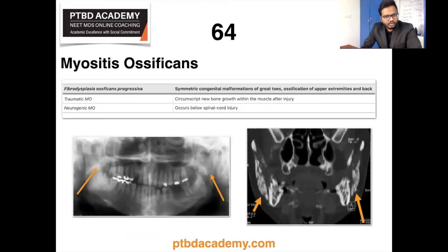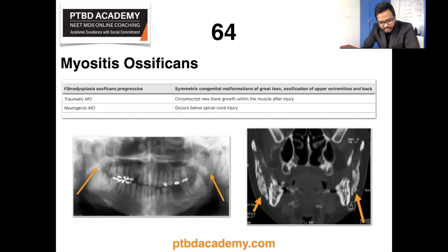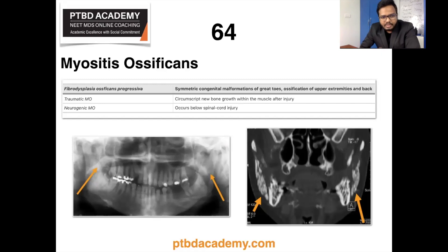Myositis ossificans, as the name indicates, is ossification of muscle structure due to trauma. It is a heterotopic bone formation within a muscle. Its incidence in the head and neck is rare — found mainly in the extremities in about 80% of cases. In the head and neck, involvement of the temporal, masseter, buccinator, platysma, and sternocleidomastoid muscles have been described. Subtypes include fibrodysplasia ossificans progressiva, traumatic myositis ossificans, and neurogenic myositis ossificans.